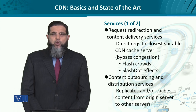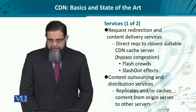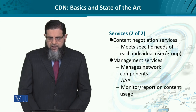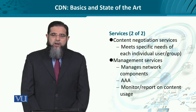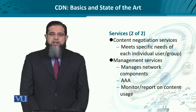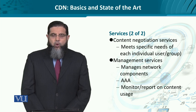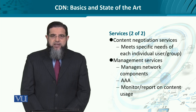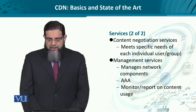Then we have content outsourcing, mirroring, caching, and distribution. This involves replication and caching of content from the original server to other web servers. Then we have content negotiation. Back in old days, we had something known as a service-oriented architecture with user agent, service agent, and directory agent. The content negotiation service essentially allows users to have a very specific, individualistic experience by getting the content that meets their demand the most.